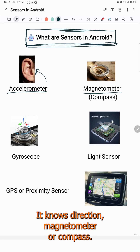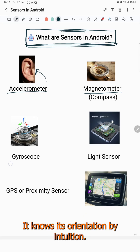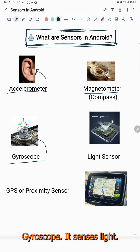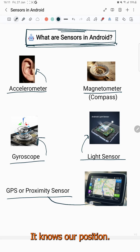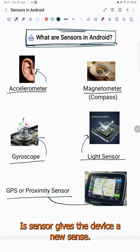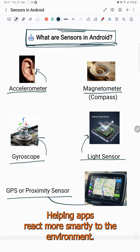It knows direction — magnetometer or compass. It knows its orientation — gyroscope. It senses light — light sensor. It knows our position — GPS or proximity sensor. Each sensor gives the device awareness, helping apps react more smartly to the environment.